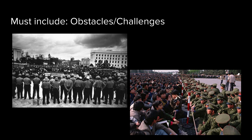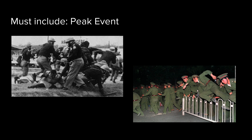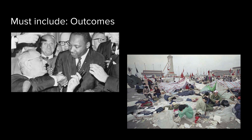Then their movements met obstacles — they met challenges — and I want you to show us graphically what those challenges are and then tell us about it. There's always going to be a peak event. The peak event could be when the soldiers attacked in Tiananmen or when the police attacked the protesters. There's always some major turning point, and that turning point had some kind of an outcome. The outcome wasn't always great. In some cases we had the Civil Rights Act that President Johnson signed — great event. We also had events that were not so positive, like the outcomes and all the 3,000 people who were killed in Tiananmen Square and all the injuries that came as a result of that, and the communist government is still in place.